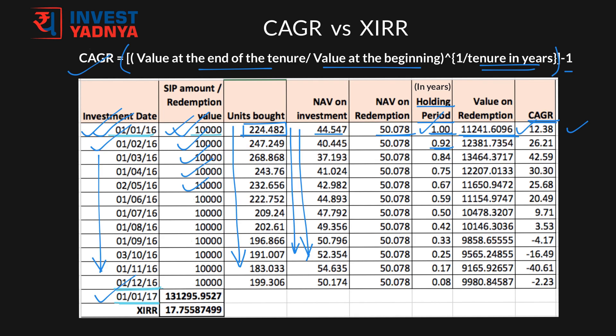Some people might not be interested in knowing the individual CAGR of each SIP investment — they would want to know their collective CAGR. XIRR, or internal rate of return, is nothing but the collective CAGR of your investment. You can calculate XIRR in Excel with the formula where B2 is your first investment amount, B14 is your redemption amount, A2 is your first investment date, and A14 is your redemption date. Based upon this formula, the collective CAGR of an SIP in DSP BlackRock Microcap Fund from 1st of January 2016 to 31st of December 2016, redeemed on 1st of January 2017, is 17.75% per annum.